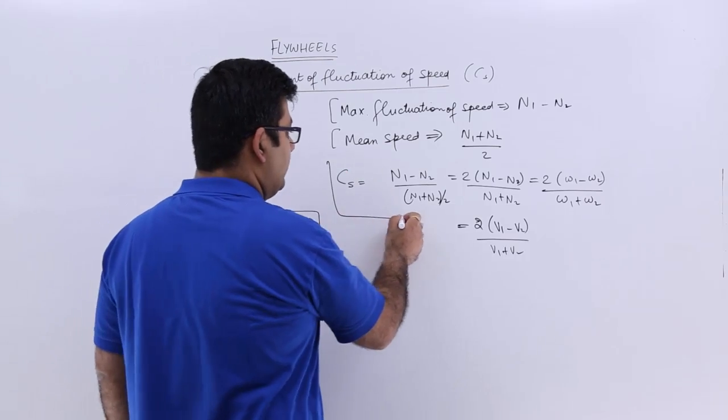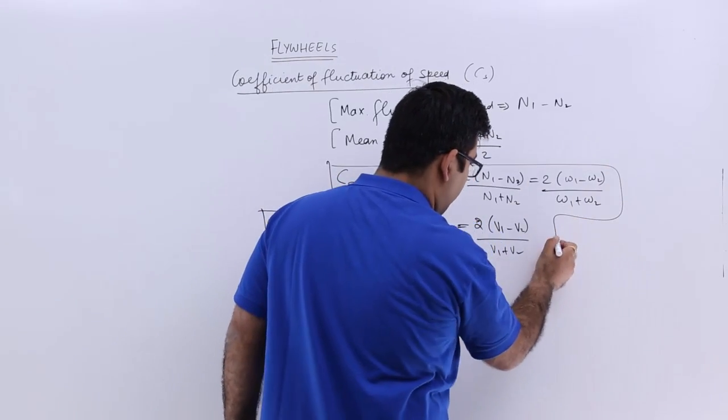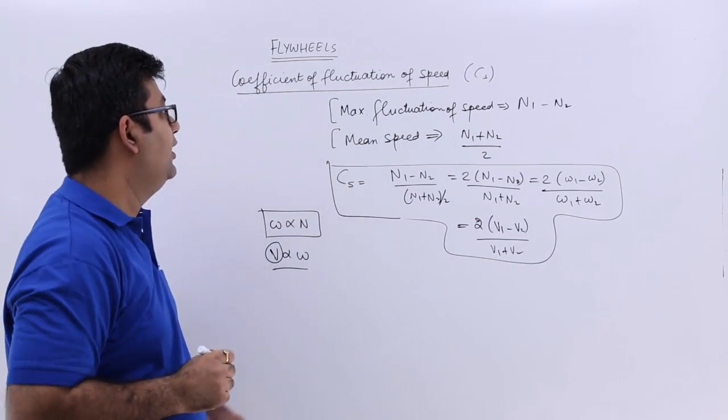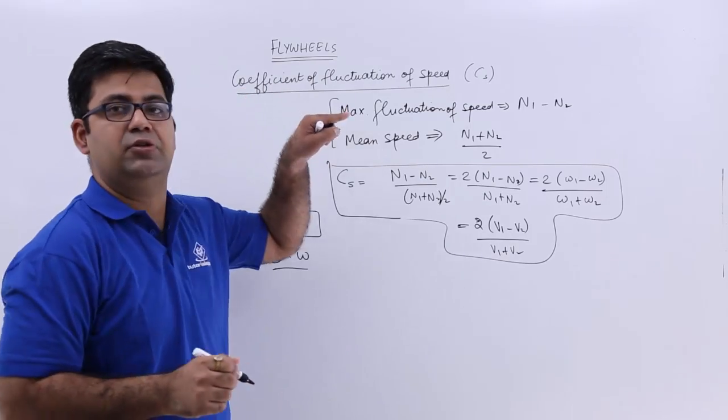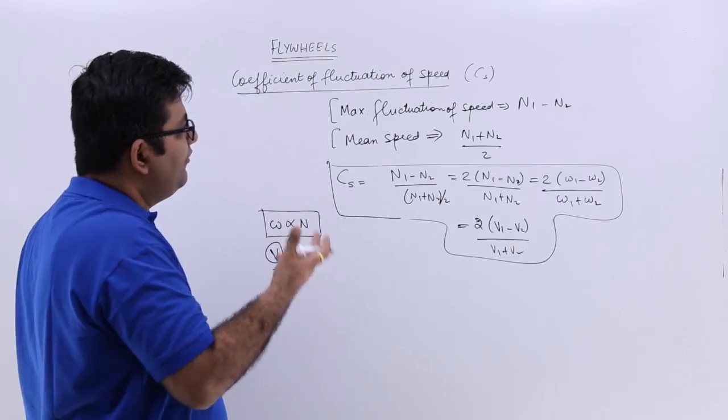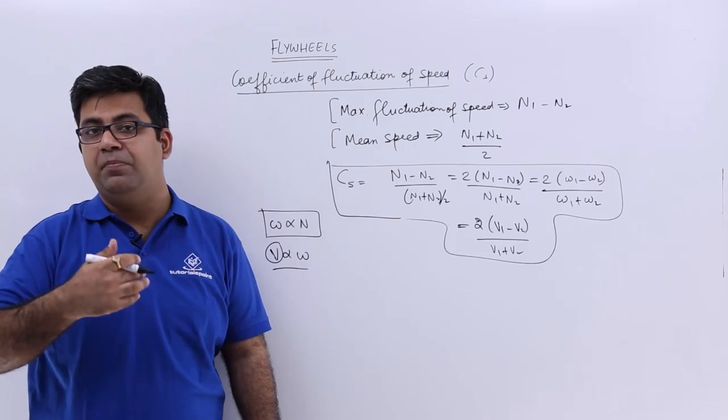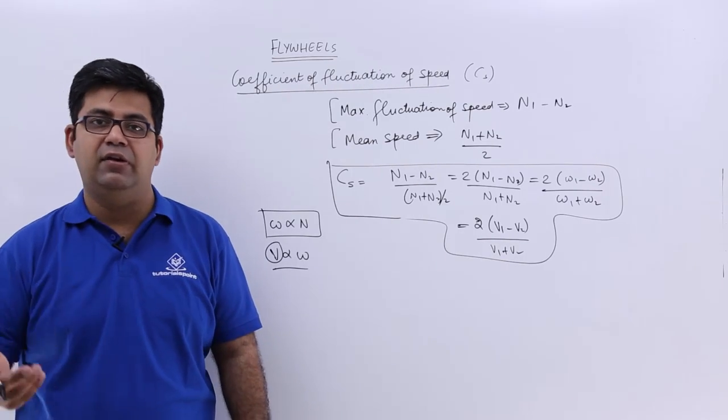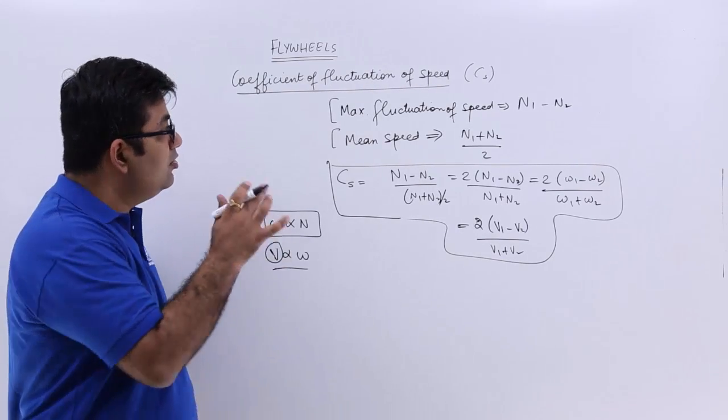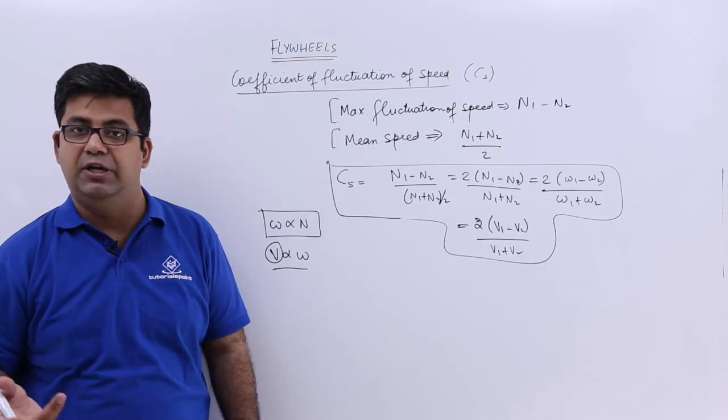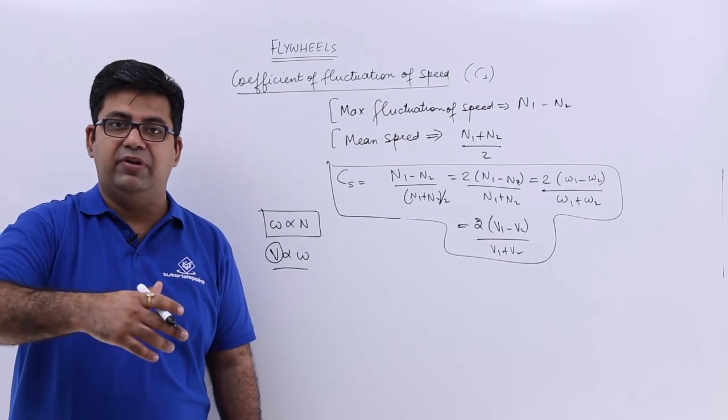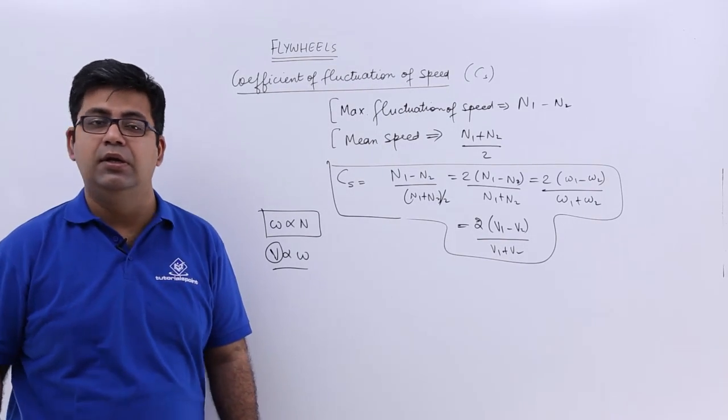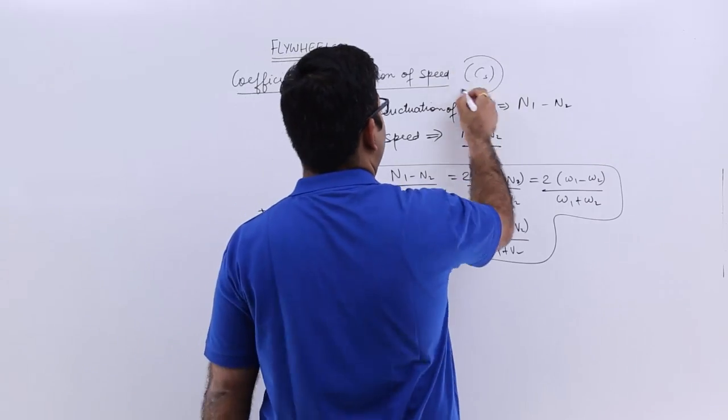So this is the mathematical formula for calculating the coefficient of fluctuation of speed. Now, the coefficient of fluctuation of speed is basically a limiting factor in the design of flywheels. And the value of Cs depends upon the service conditions. So for a different service condition, you will have a different value of Cs.